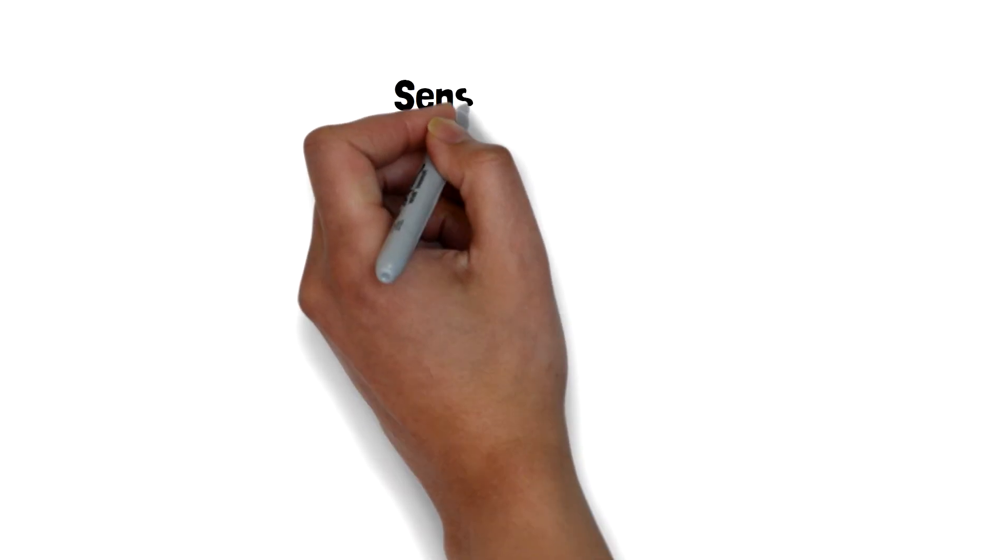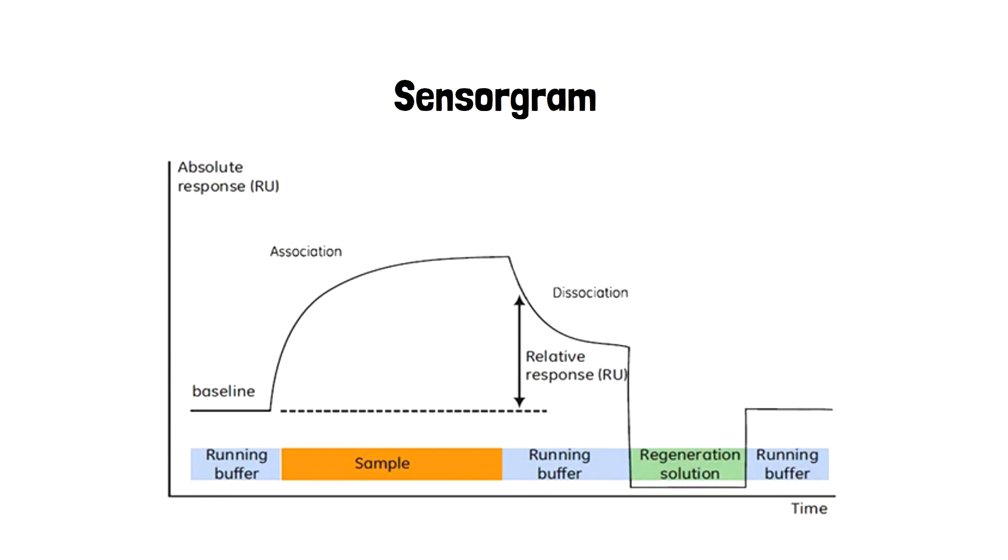This data is collected using a software that corresponds to the SPR instrument. The result from the change in the refractive index is displayed as a sensorgram, where the binding response is plotted on the y-axis against time plotted on the x-axis.